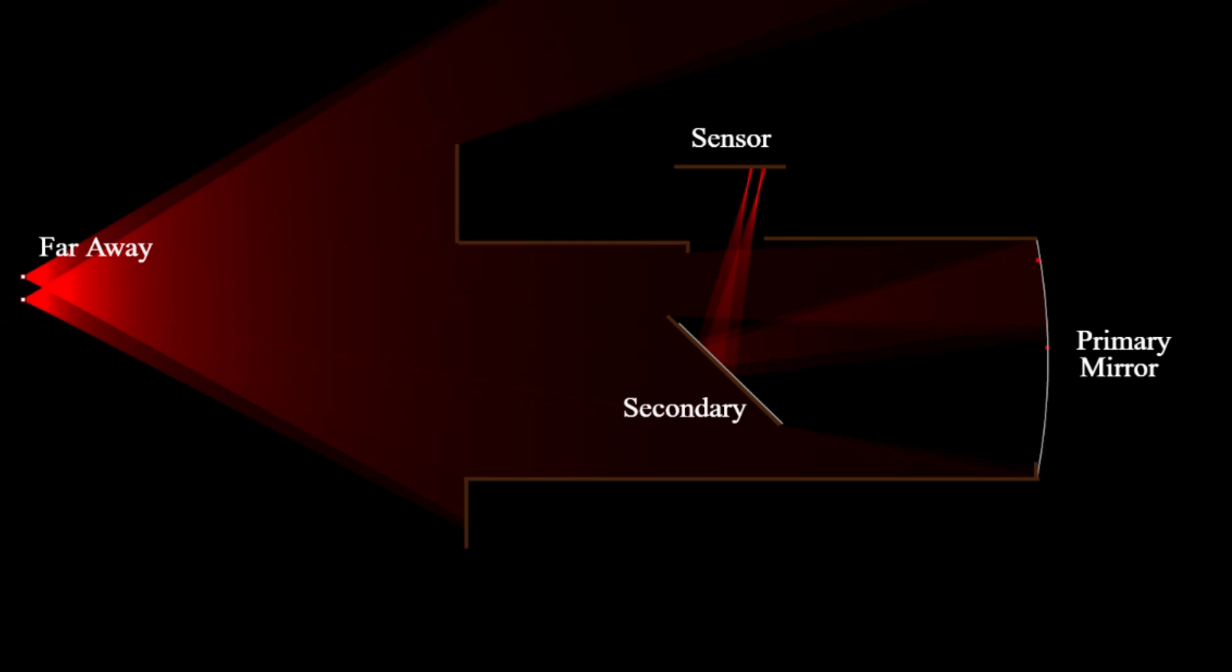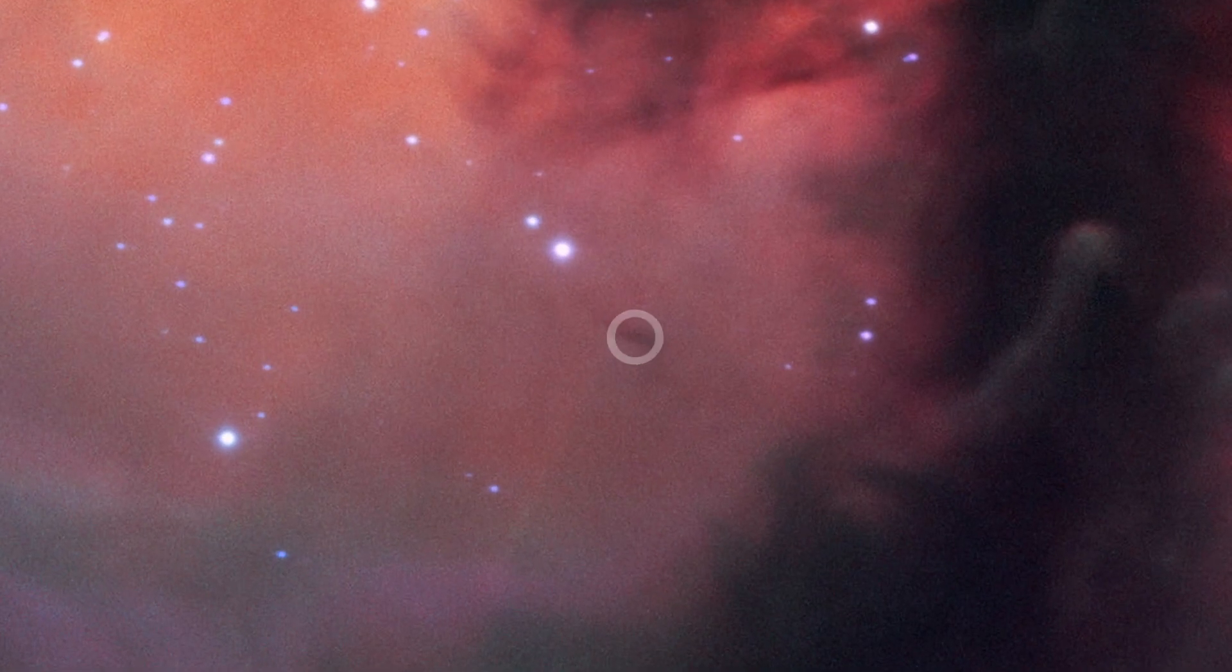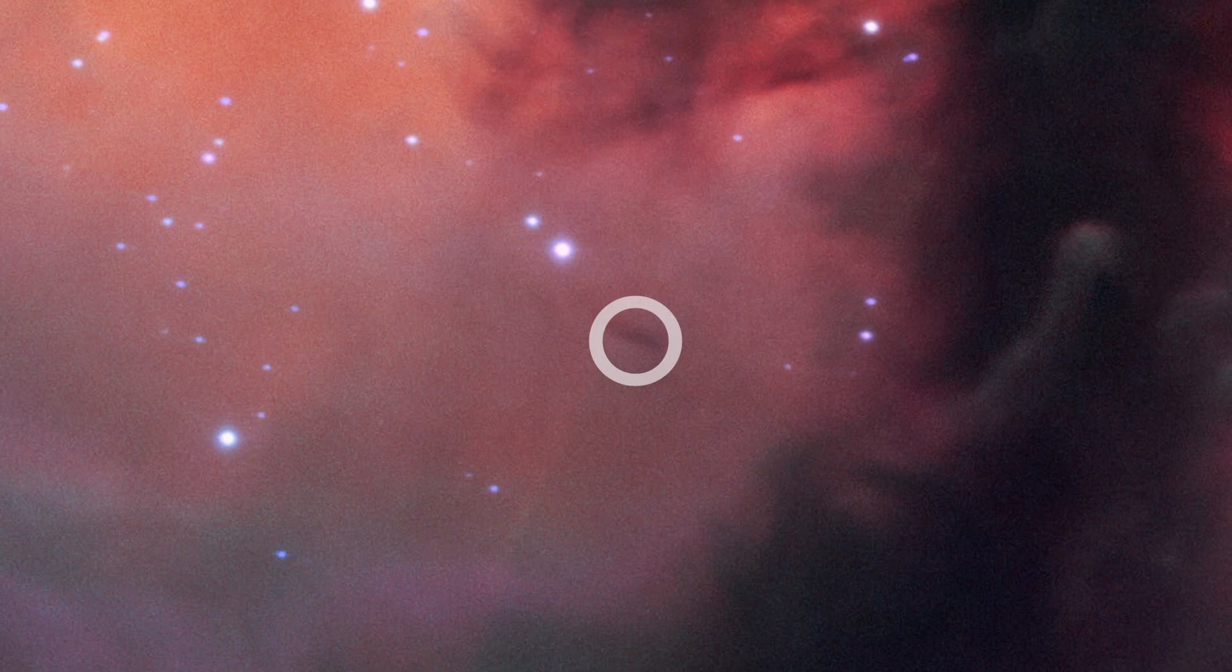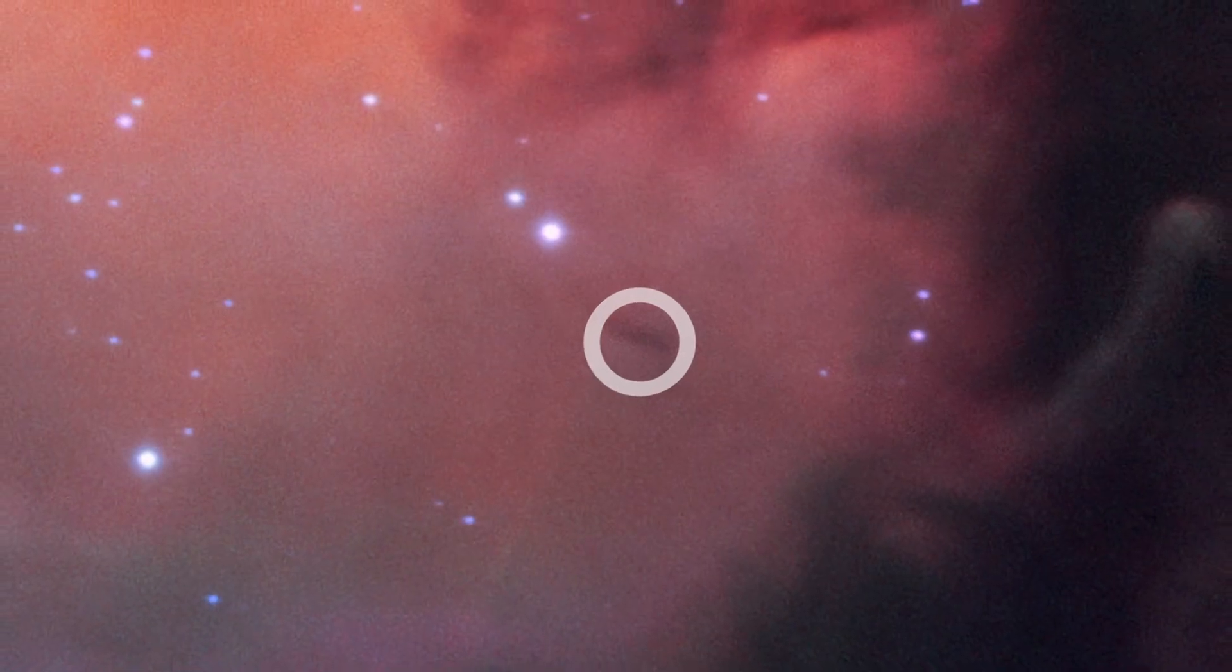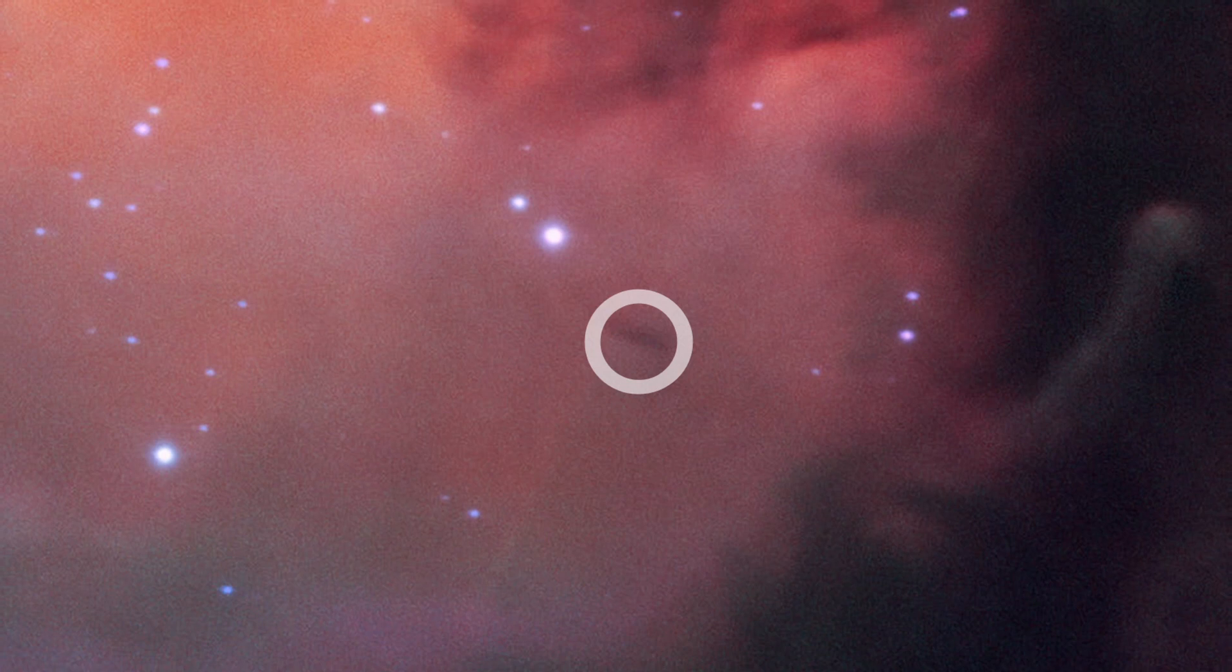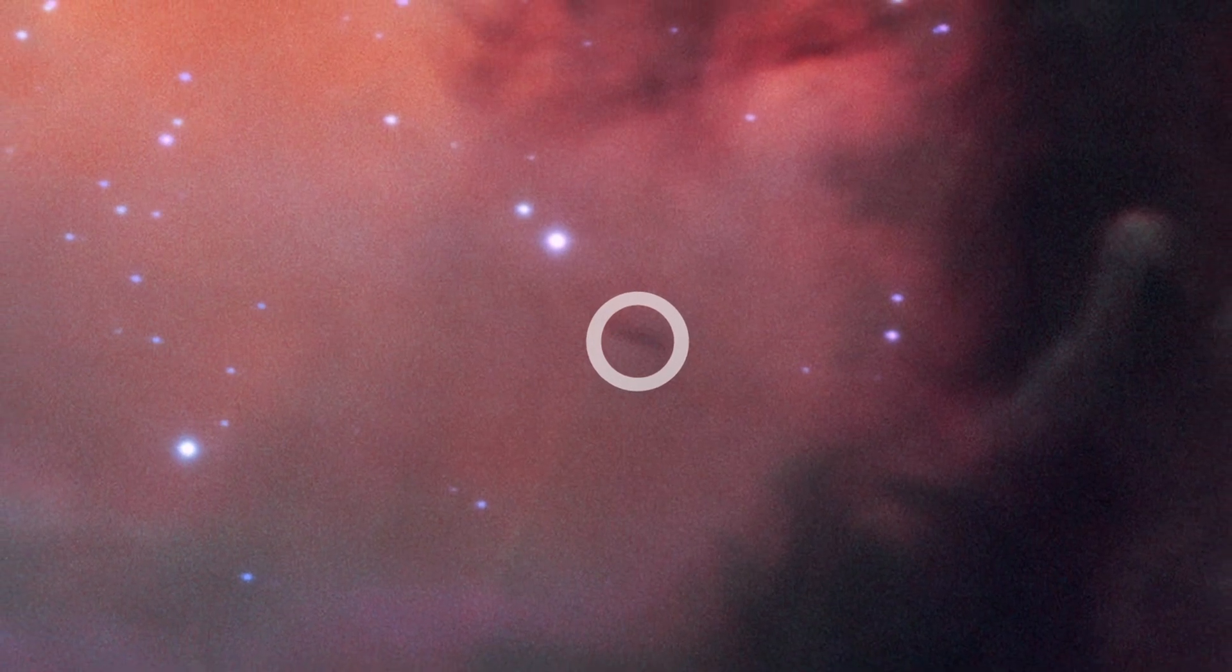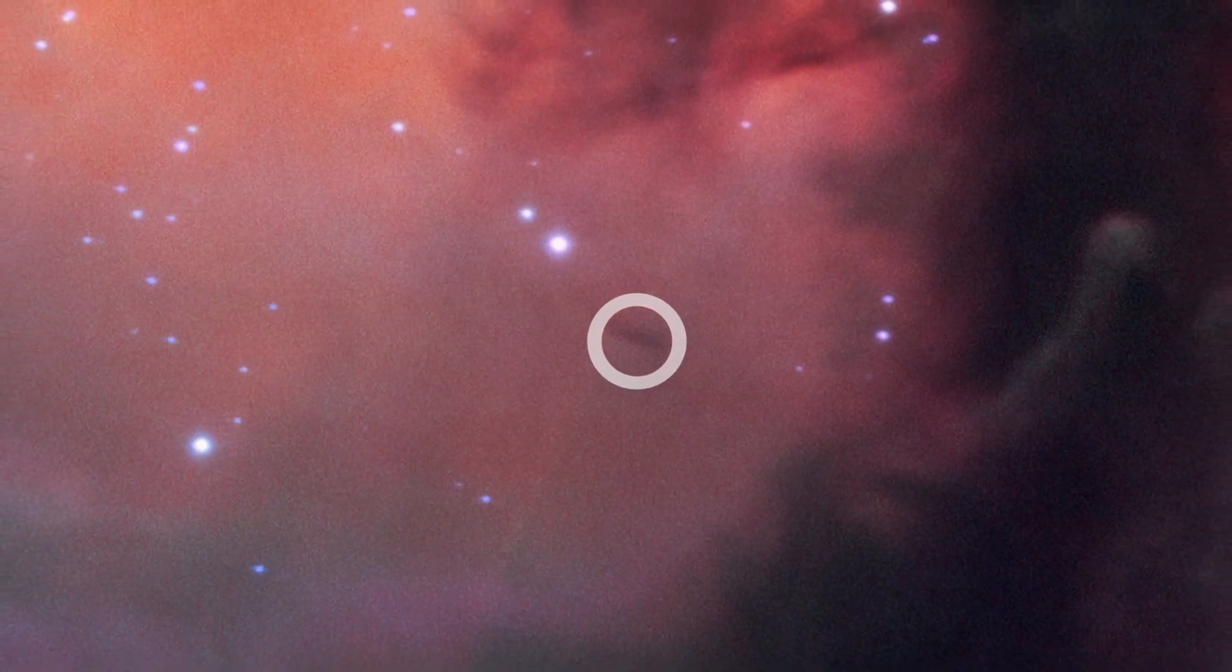But how much detail can we see? Is this small patch of dark nebula resolvable when you don't have to deal with the atmosphere? That answer is, interestingly enough, related to why Hubble stars are bigger than one pixel.